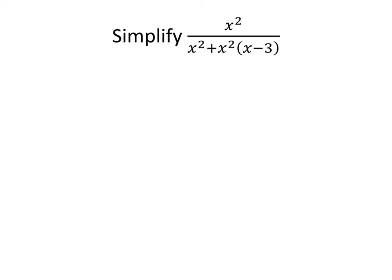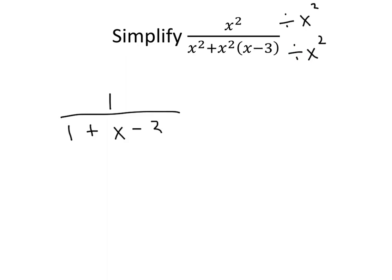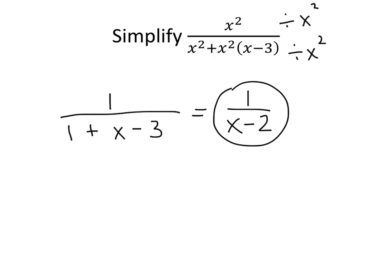Let's do one more. We see a lot of x squareds — there's an x squared on the top, another x squared, another x squared. Again, you might be tempted to just start crossing things out. Instead, I want to encourage you to think about dividing rather than crossing out. Since we've got all those x squareds, we think it might be a good idea to divide top and bottom by x squared. On the top, x squared divided by x squared is just 1. On the bottom, x squared divided by x squared is again 1, plus x squared times x minus 3 divided by x squared — the x squareds go away and I just get x minus 3. Now I can simplify just a little bit more, because 1 plus negative 3 is negative 2. So when all is said and done, I get 1 divided by x minus 2.